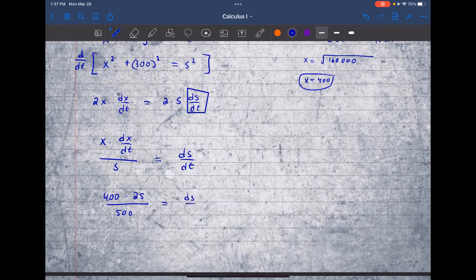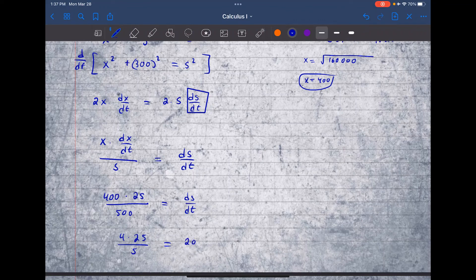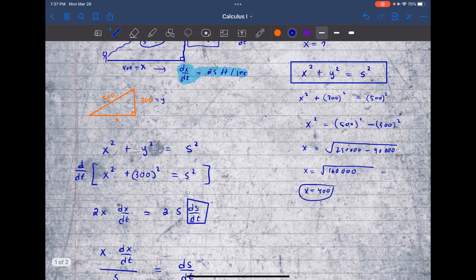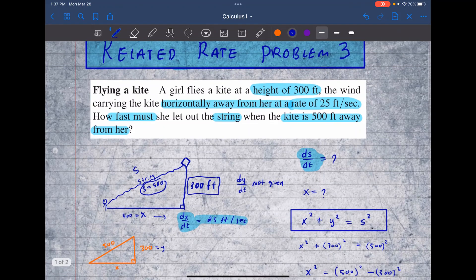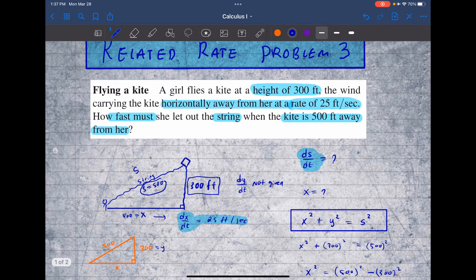And this is equal to ds/dt. Now simplify this so you'll have, and this will equal 20 feet per second. So that's ds/dt, which is the rate how fast she let out the string when the kite is 500 feet away from her.